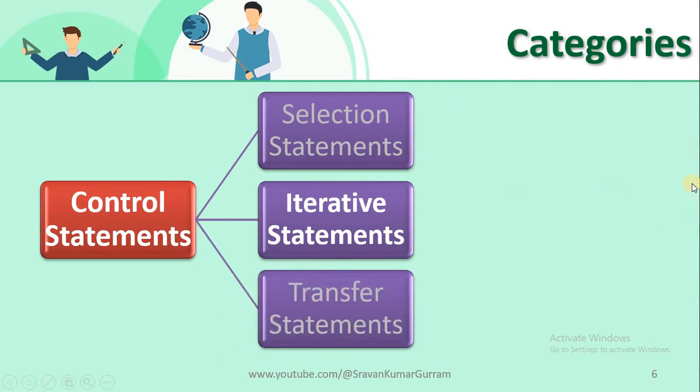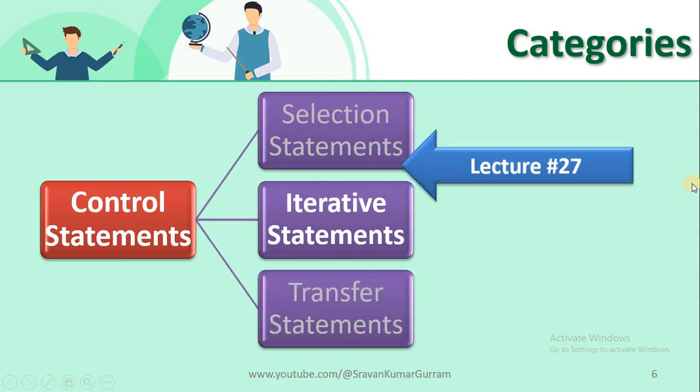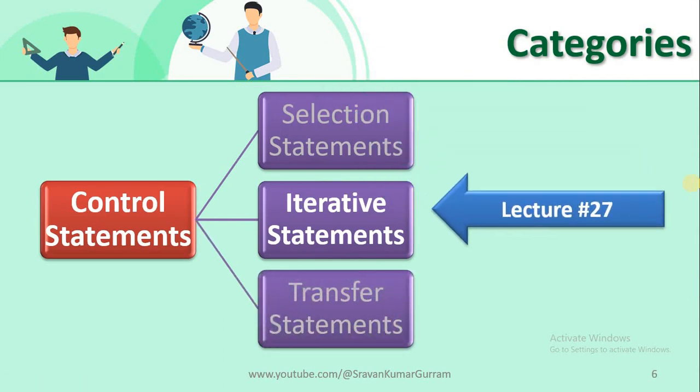Coming to the second category — iterative statements — these are also called looping statements. In this lecture we are going to cover iterative statements. Within iterative statements we have two categories: for loop and while loop. In this video we will understand the for loop, and we will discuss the while loop in the next video.